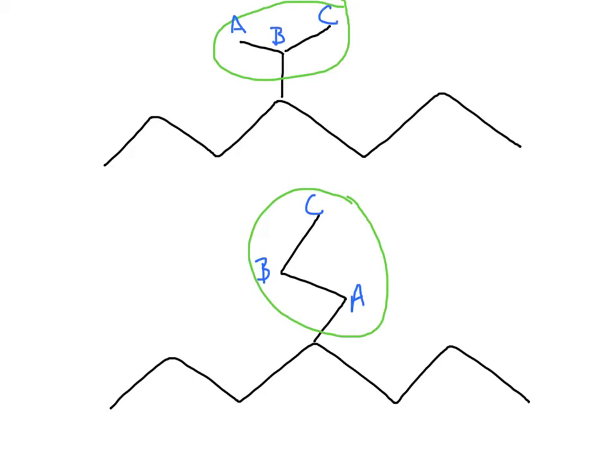And so what I see is that these are three carbon groups and the prefix for three is prop. So when we look at the names, we know we're dealing with the prop in there. It's a side group, so we'll have propyl in there.